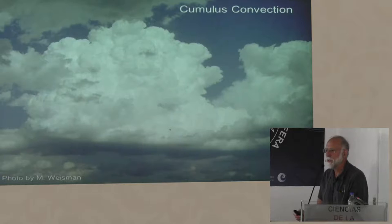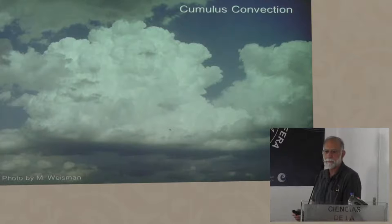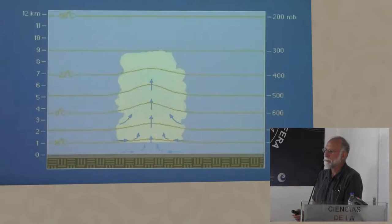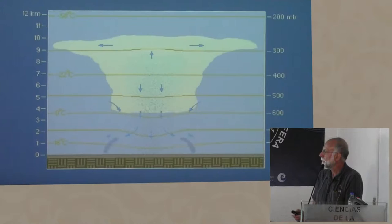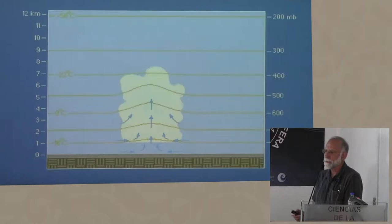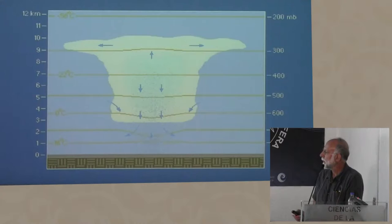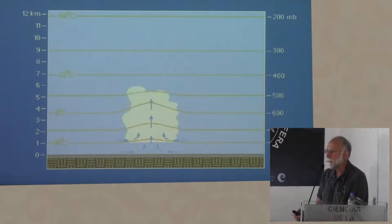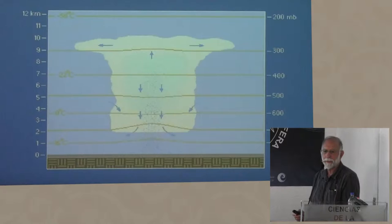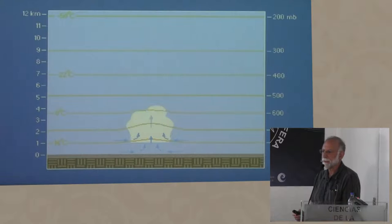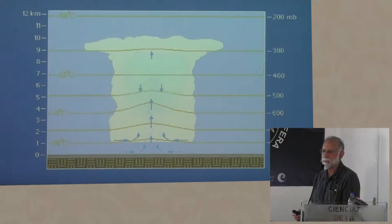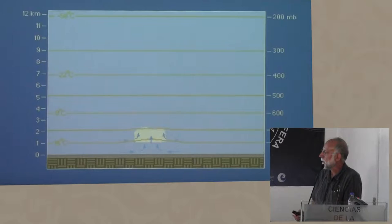Let's start out with cumulus convection. Here's your basic garden variety cumulus cloud — a nice photograph by my colleague Morris Weissman. Something gets the air lifted. As the air lifts, it expands, adiabatically cools, and as it cools, condensation occurs. The vapor in the air turns to liquid, and at a certain point the liquid falls down below. As it falls out, it will evaporate and chill the air. Many of you have had this experience on a hot day — a thunderstorm comes along and there's a rush of cool air out of the thunderstorm because the rain has evaporated into the air, chilled it off, and caused the air to become heavier.